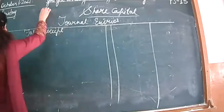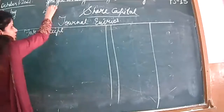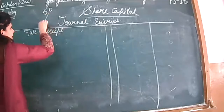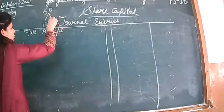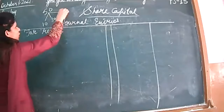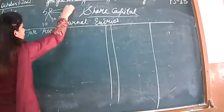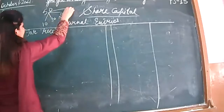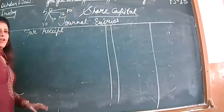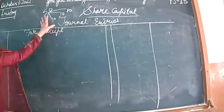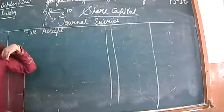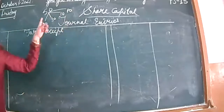For example, a share is of 50 rupees. 10 rupees on application, 30 rupees on allotment, then 10 on first call, and the remaining 10 on second and final call. So this is the bifurcation as per my assumption. Each share is of rupees 50.